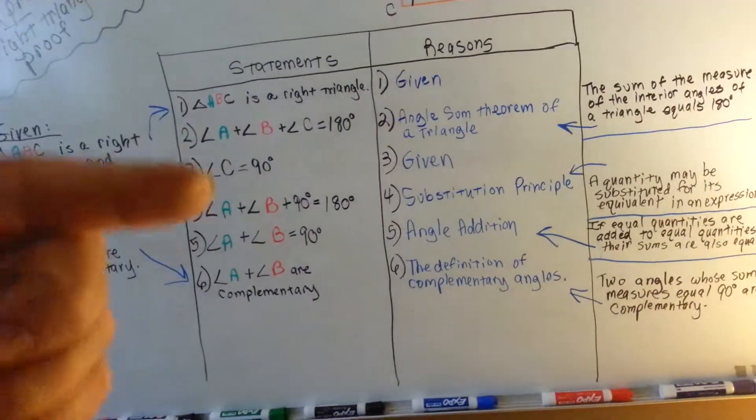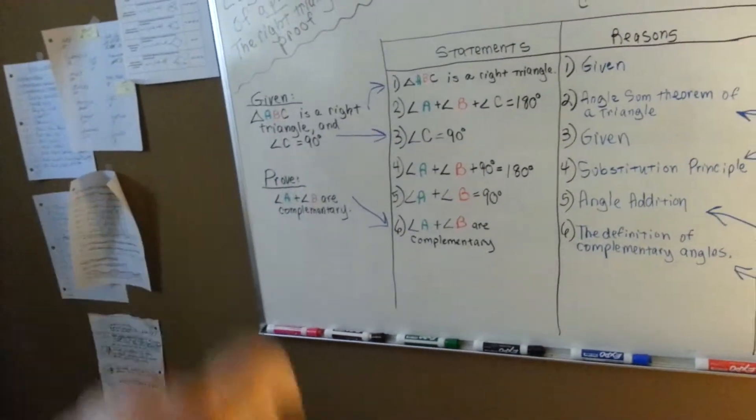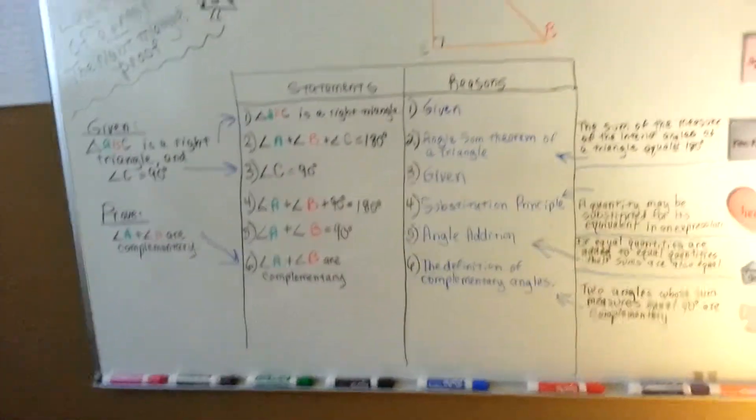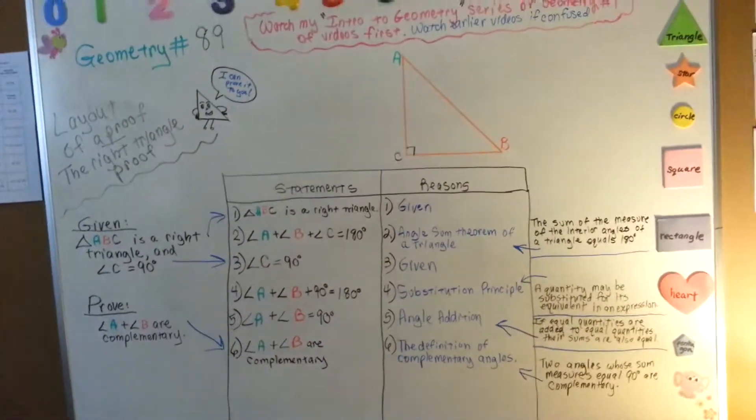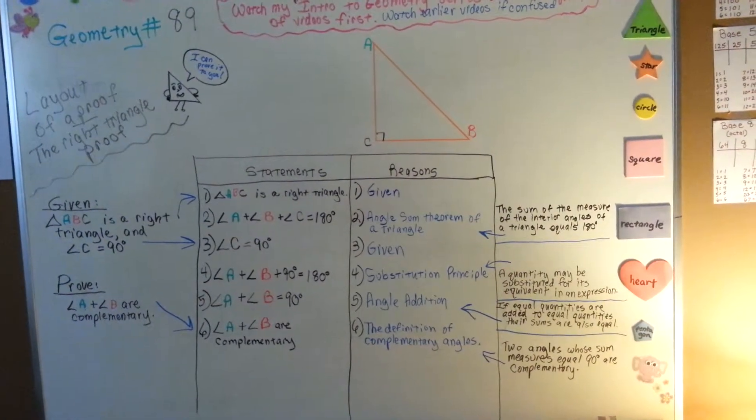So we've gone boom, boom, boom, boom, and slowly, slowly proved that angle A and B are complementary, complementary angles. That is the right angle, right triangle proof.